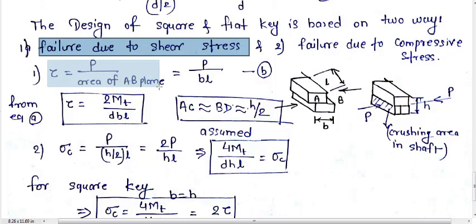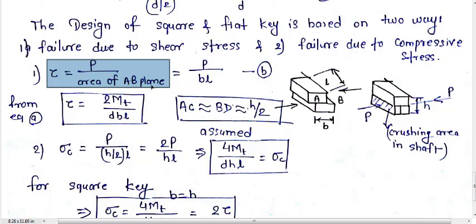Crushing will occur due to hub load and shearing will occur due to this force P. First considering failure due to shearing stress. Tau equals load upon area. The area will be the resisting area. Here the resisting area will be AB plane.